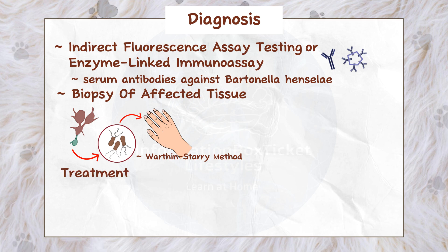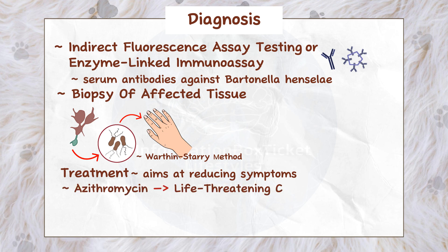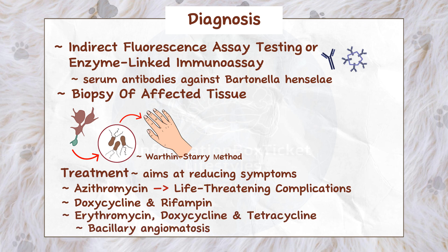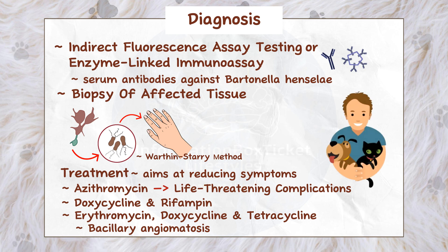Treatment is targeted at minimizing symptoms, as cat scratch disease normally resolves on its own after a few months. However, antibiotics such as azithromycin are occasionally necessary to avoid life-threatening consequences. Other options for treating the condition include doxycycline and rifampicin. Treatment for bacillary angiomatosis includes antibiotics such as erythromycin, doxycycline, and tetracycline. Finally, removing fleas from a domestic cat's habitat can help avoid infection in people.